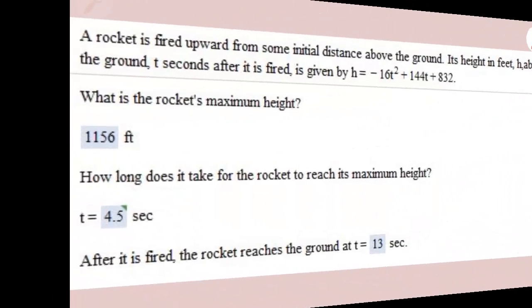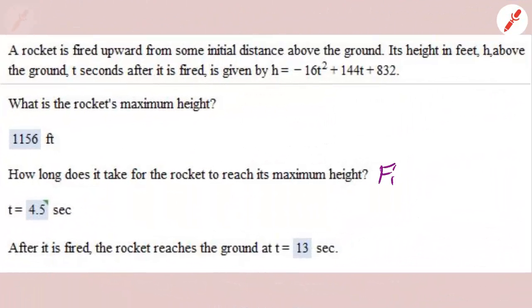Okay let's go on to another problem. A rocket is fired upward from some initial distance above the ground. Its height in feet h above the ground t seconds after it is fired is given by h equals negative 16t squared plus 144t plus 832. What is the rocket's maximum height?